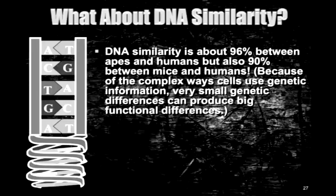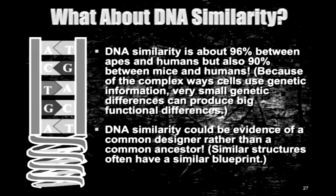Is one possibility that we have a common ancestor? Yes, Dawkins could be right. But what's the other possibility he's not even thinking of? We have a common creator. DNA similarity could be evidence of a common designer or creator rather than a common ancestor. Similar structures often have a similar blueprint. What would the evidence have to look like at the DNA level for Dawkins to say we're not ancestrally related? Would the DNA have to be 50% similar? 25%? It seems arbitrary — we simply don't know.